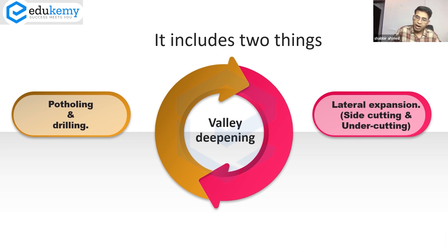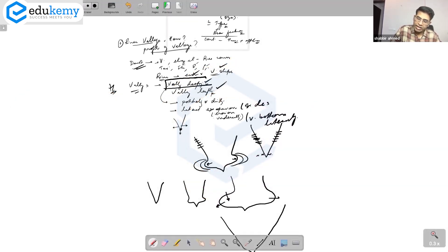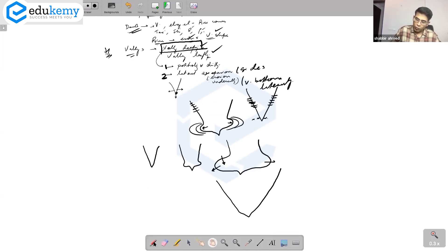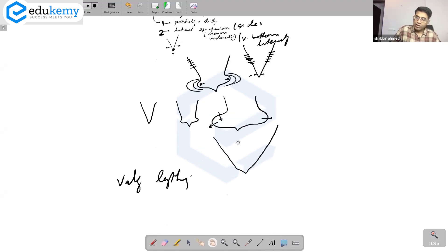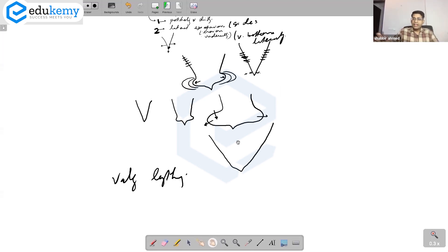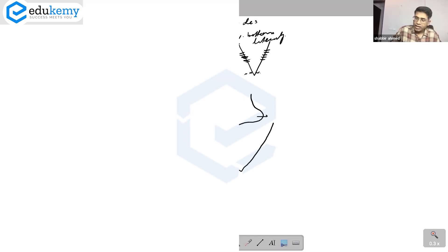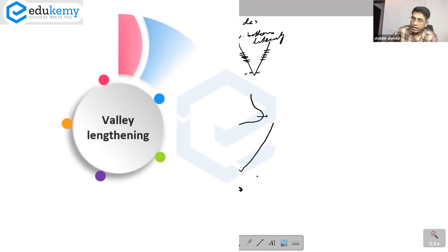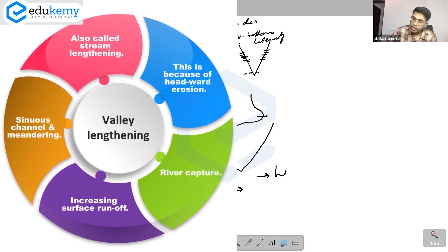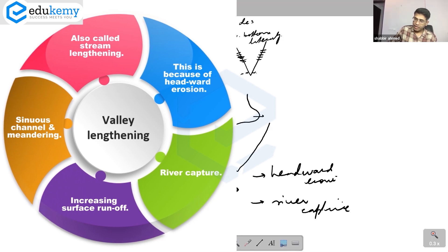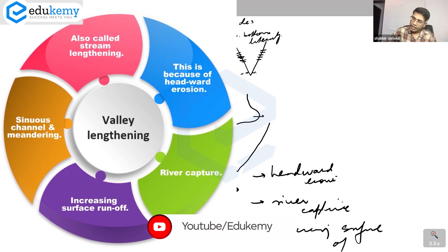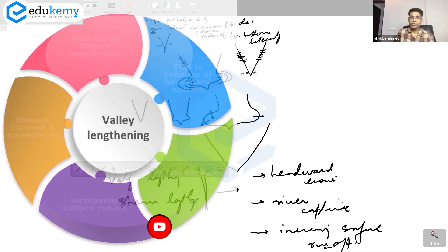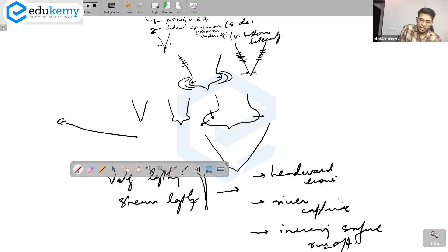The second aspect of valley formation is valley lengthening, also called stream lengthening. Valley deepening includes potholing and lateral expansion processes. Valley lengthening is primarily because of headward erosion — it can be because of river capture, and also because of increasing surface runoff.